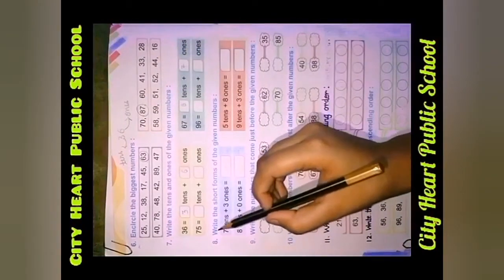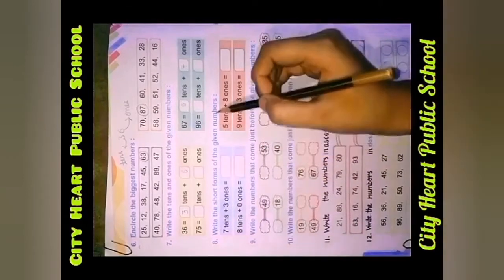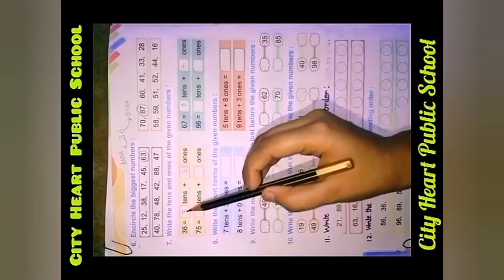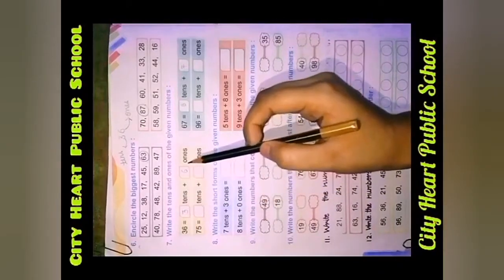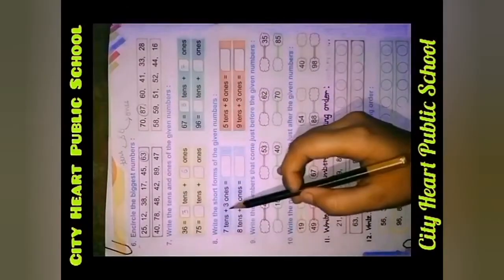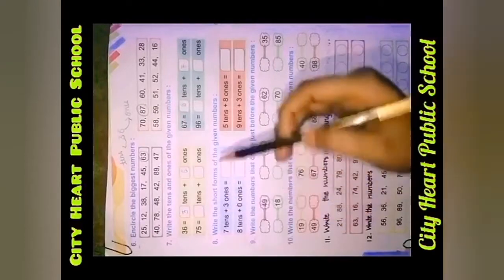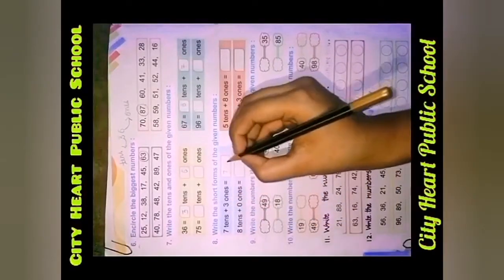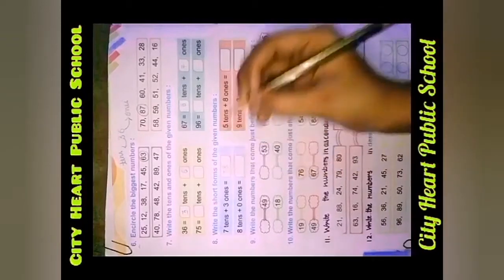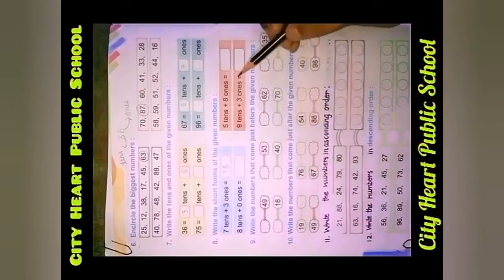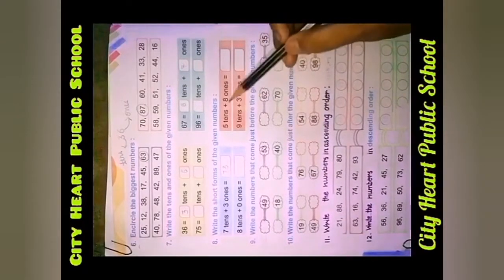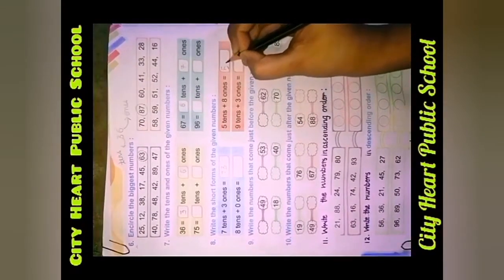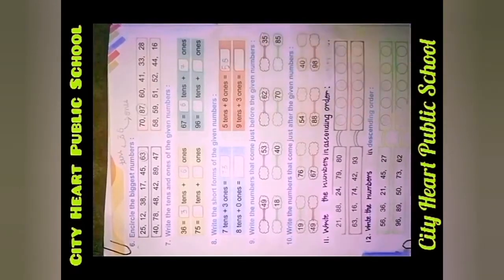Coming to question number 8: Write the short form of the given number. Short form likhna hai. Jaise 36 ko open karke humne three tens or six ones likha. Isi tarah 73 — seven tens aur three ones ko uske short form likhna hai. So, seven tens matlab seven, three ones matlab three — seventy three. Like that. Five tens and eight ones: five tens and eight ones — fifty eight.